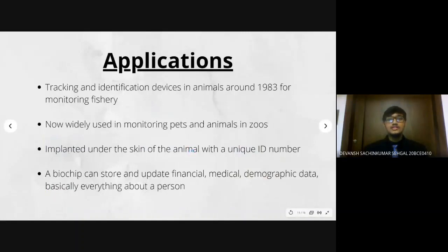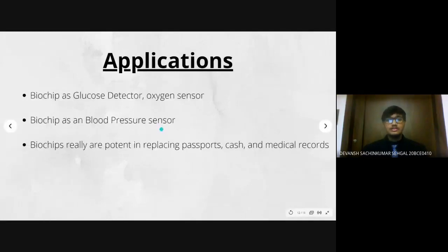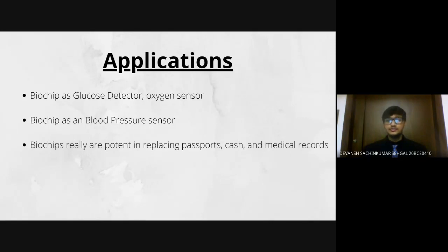Coming on to the applications of biochips: biochips have been used for tracking and identification of animals since circa 1983 in fisheries. Now they are used widely in zoos to monitor pets and animals. They can store all the necessary data from medical and financial records to demographic data. They can be used for medical purposes as a glucose detector, a BP detector, oxygen level detector, a heartbeat detector and many others. They can basically replace all types of vital data from your passport to cash, and there may be a time where physically carrying things is deemed obsolete.